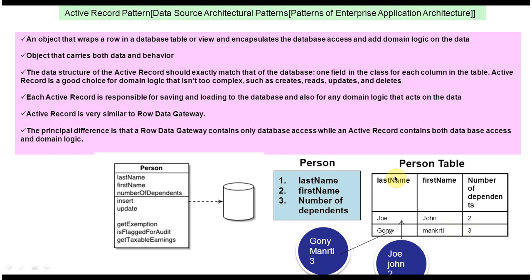For this person table, if you want to create a class that maps the columns, it will look like a Person class with variables: last name maps to the last name column, first name maps to the first name column, and number of dependents maps to the number of dependents column. As per the Active Record design pattern, it will also have methods for inserting data, updating table information, and selecting records from the database table.